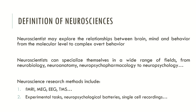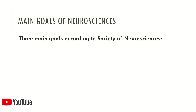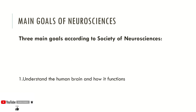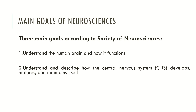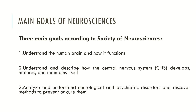Now let's look at the main goals of Neurosciences according to the Society of Neurosciences. The first goal is to understand the human brain and how it functions. The second goal is to understand and describe how the central nervous system develops, matures and maintains itself. The third main goal is to analyze and understand neurological and psychiatric disorders, and discover methods to prevent or heal them.